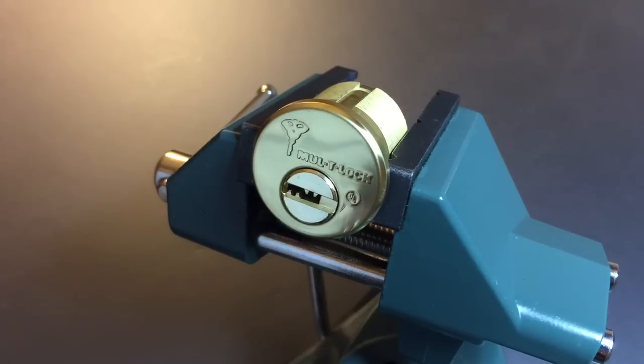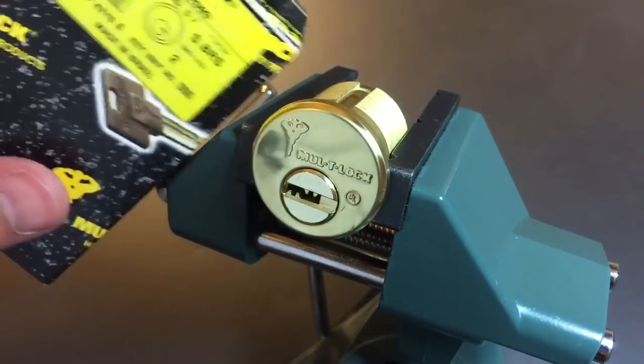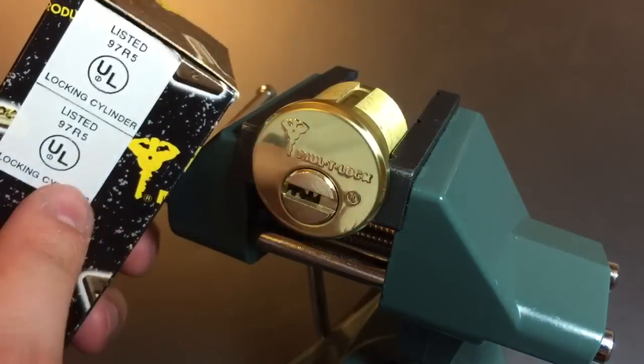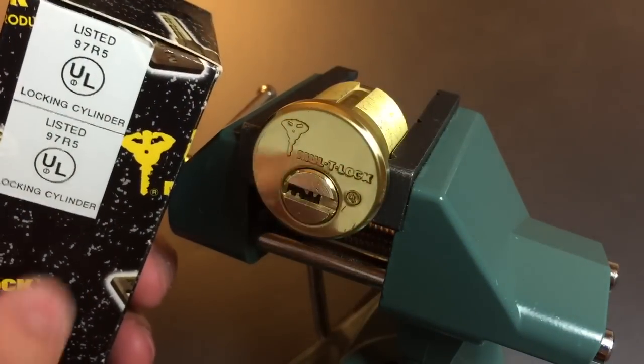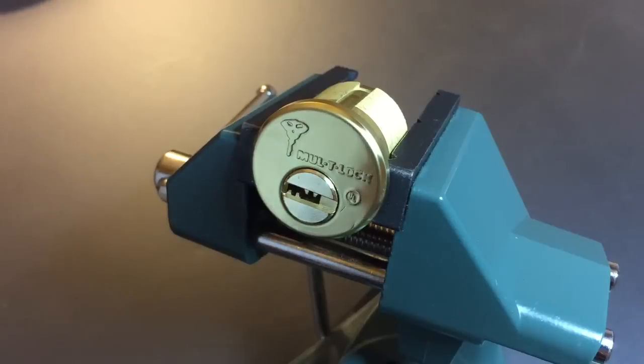This is the Lock Picking Lawyer and the lock I have for you today is a multi-lock classic mortise cylinder. It's brand new, just came out of the box. It's one of their UL rated cylinders, says so on the box and again on the face of the lock. I believe the UL rating for these multi-locks means it has a little bit more drill protection.